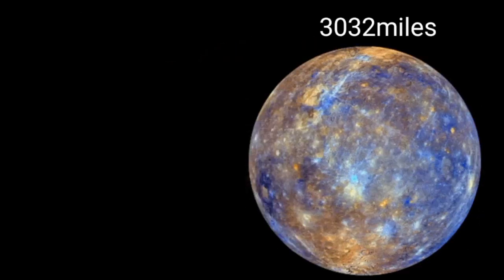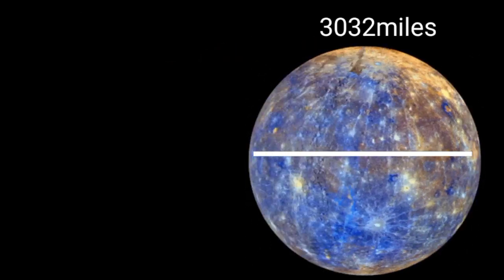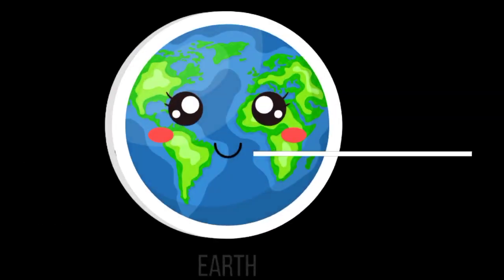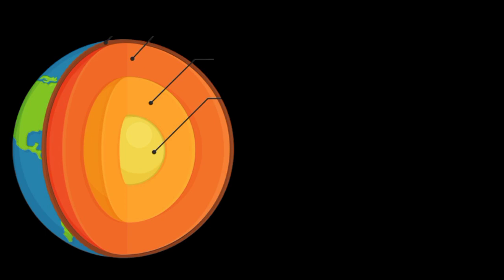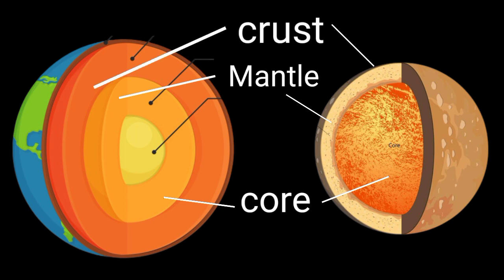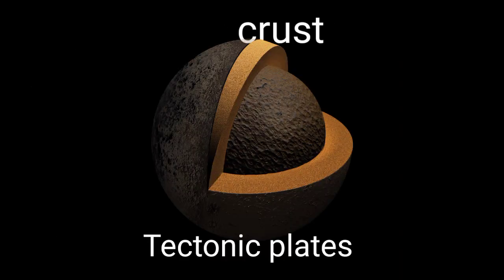Its diameter measures approximately 3000 miles, about the size of continental United States. Like Earth, Mercury is also a terrestrial planet with three main layers: core, mantle, and crust. Only, Mercury's crust has no tectonic plates.